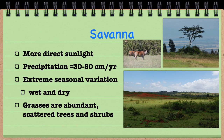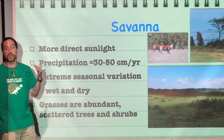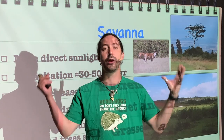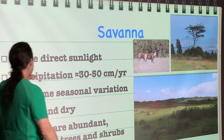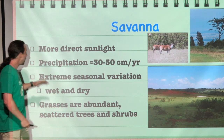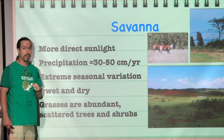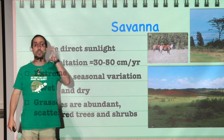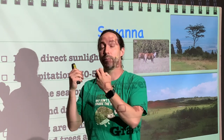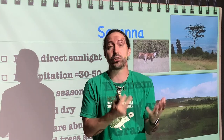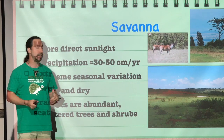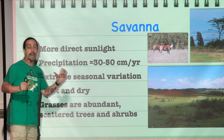Moving on to a savanna, or tropical grassland. Here we get more direct sunlight because we are getting closer to the equator, which also means more energy in that light. The precipitation is about 30 to 50 centimeters a year, not as much as many other biomes, and there is extreme seasonal variation — a wet season and a dry season, rather than hot and cold seasons. It can go from plenty of water to complete drought. Grasses are still the dominant species, just like in the temperate grassland, but there are also some scattered trees and shrubs in a savanna.